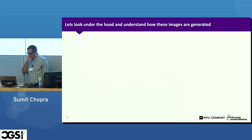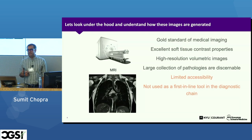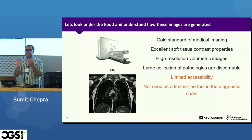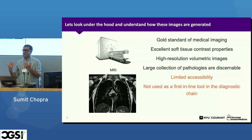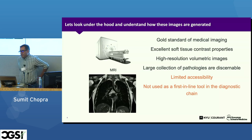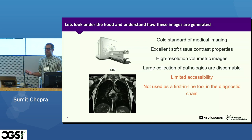To understand this better, let's look under the hood of a specific modality — namely MR — and see how these images are actually generated. MR is basically the gold standard of medical imaging: by far the most sophisticated imaging modality, with excellent soft tissue contrast properties. If you have human tissue with slight changes to it, MR can capture those changes by projecting them as different shades of gray. It produces high-resolution volumetric images, and as a result you can discern a large collection of pathologies through the human eye. But if MR is so good, why don't we just use it everywhere?